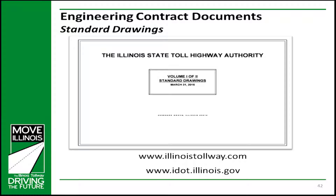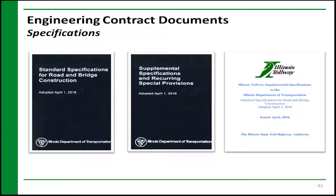All tollway standards are available on the tollway website free of charge. IDOT's highway standards are also available on the IDOT website free of charge. The tollway utilizes IDOT standard and supplemental specifications along with its own supplemental specifications for the description of work, material, and construction requirements, along with the method of measurement and basis of payment for all contract items.